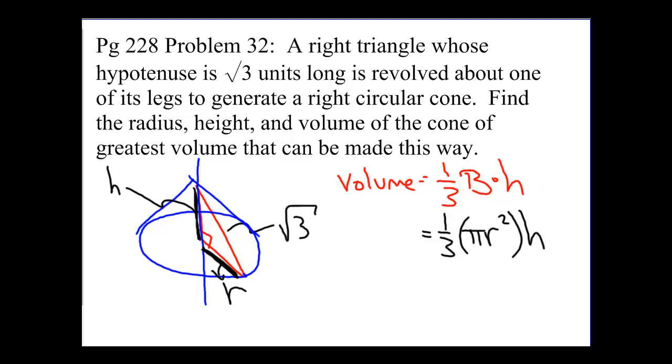So the question we can ask ourselves is, how do we make a connection between R, H, and the hypotenuse? R and H are legs of this right triangle, and the square root of 3 is the hypotenuse. So we can write the Pythagorean theorem here. The Pythagorean theorem, in this particular case, will say that R squared plus H squared has to equal the square root of 3 squared.